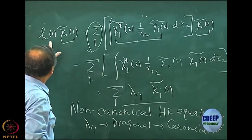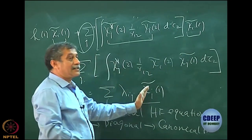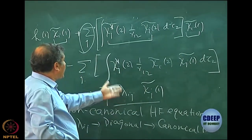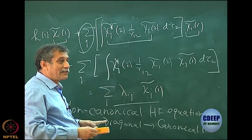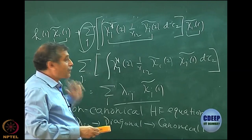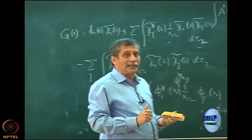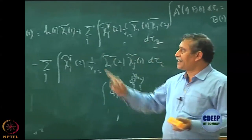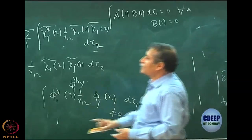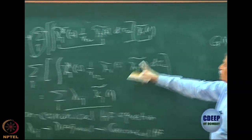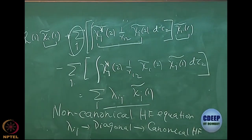The other terms are already eigenvalue form — something times chi i tilde 1. But the exchange part will always have a problem. However, I will quickly show you that formally, mathematically, I can derive an operator by making this look like chi i tilde 1, because that is what we want — 1 should be on chi i tilde on the right-hand side. So let me analyze and come back only to the exchange term.